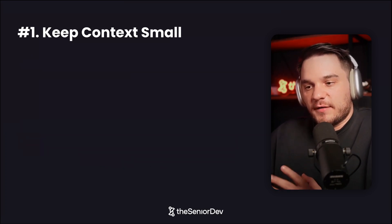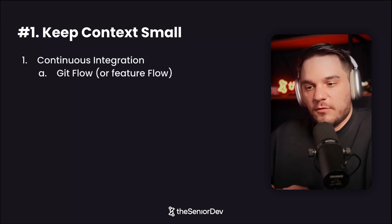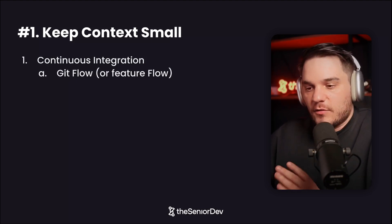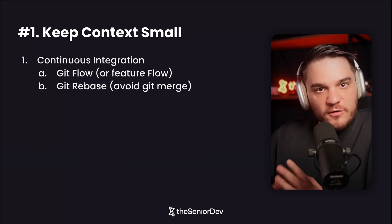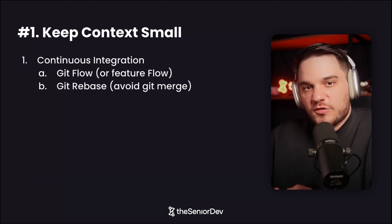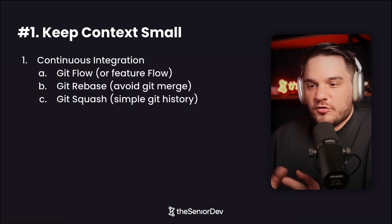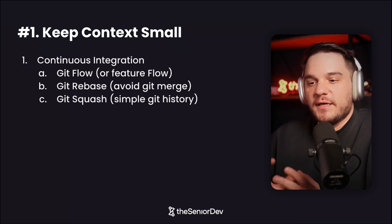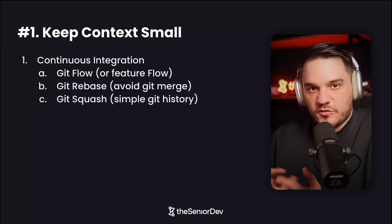A few more things you can do to keep your context windows small: use continuous integration. Make sure you follow Git flow or feature flow where you have feature branches. Make sure you use Git rebase — don't use Git merge. It will be very chaotic if you're coding with AI in a team and everybody's just pushing changes to the main branch. The history will look like hell. Make sure you use Git squash to combine all those commits into a single one — it's just a lot better to keep things simple, deterministic, and be able to roll back changes very fast.